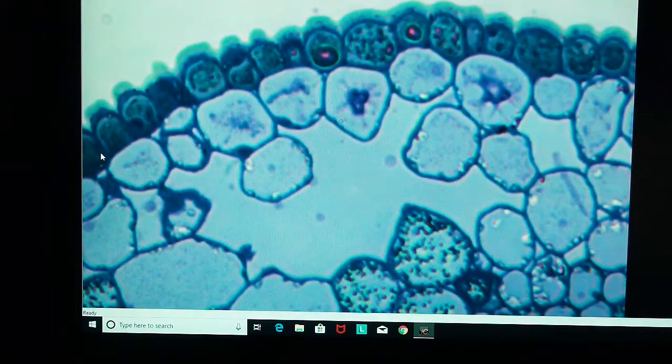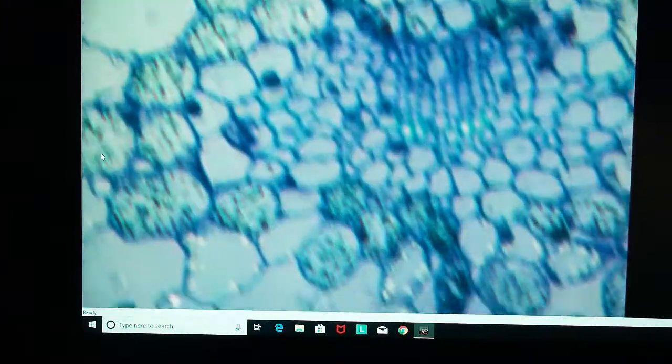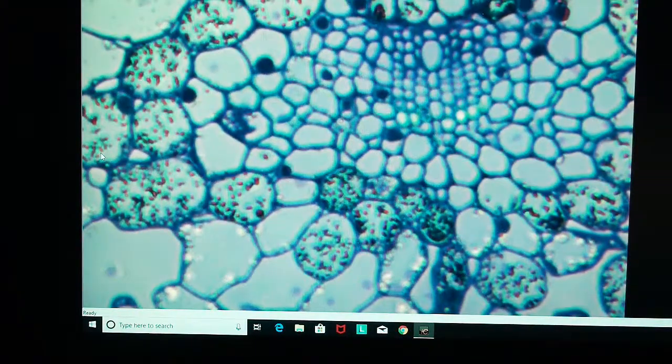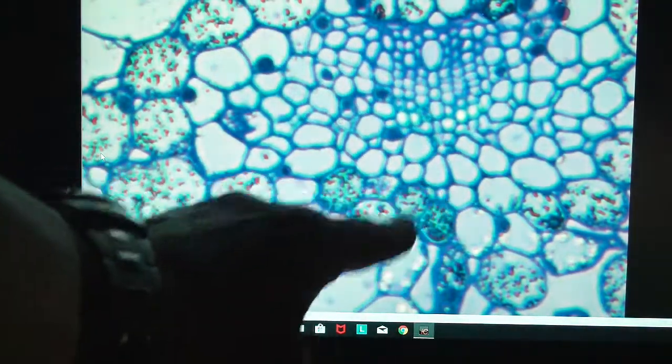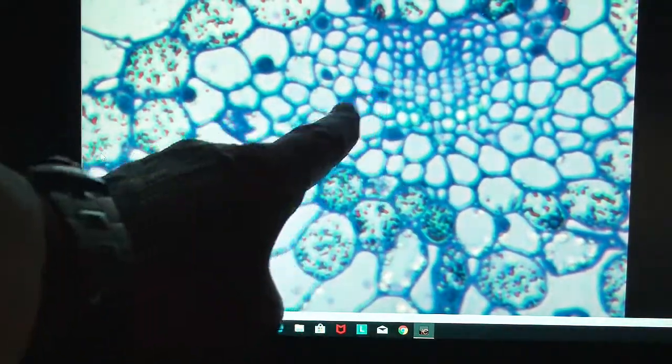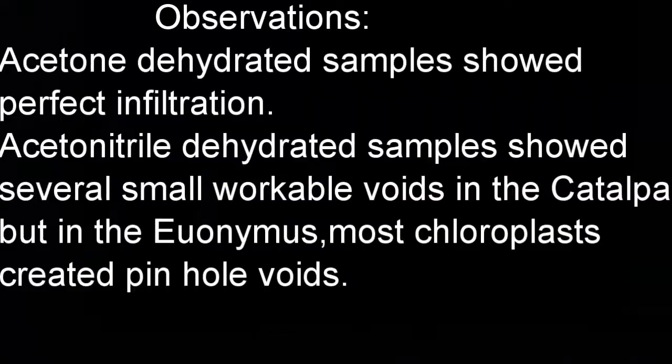The upper epithelium looks good. But again, you can see the areas where the chloroplasts are, do appear to be infiltrated, not well, not very well infiltrated. The vascular bundle looks good. So acetone dehydrated samples showed perfect infiltration and for plant material, especially the large ones, is very good. The acetonitrile, it did pretty well for the catalpa, but the euonymus, most of the chloroplasts created pinholes and it's not very good. Thank you.